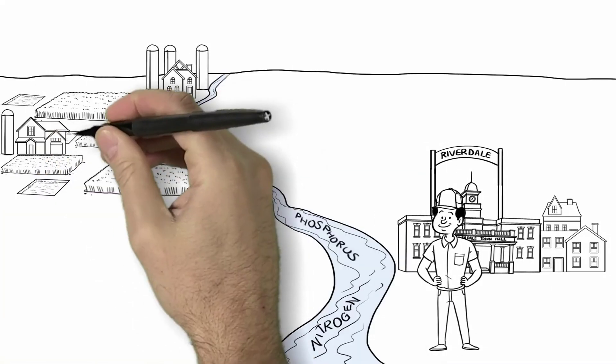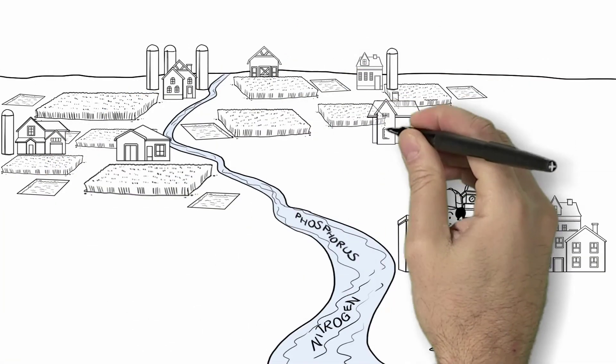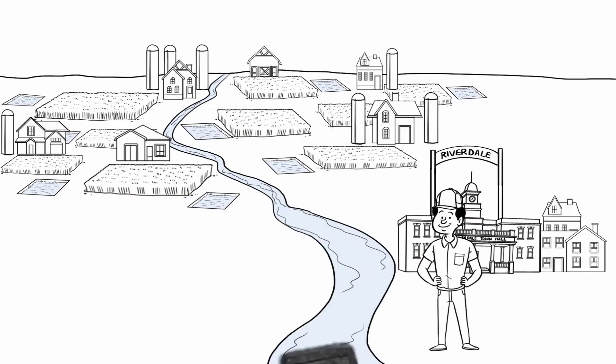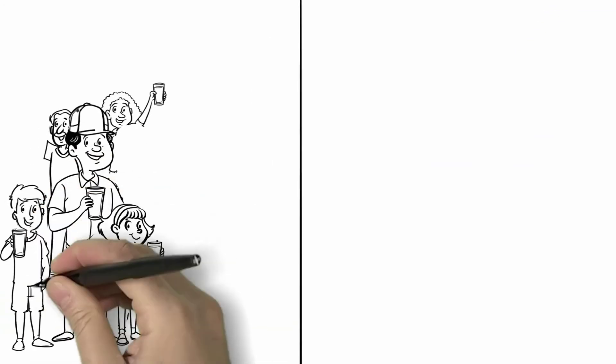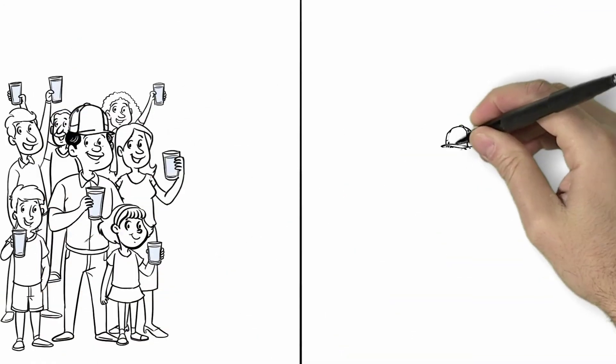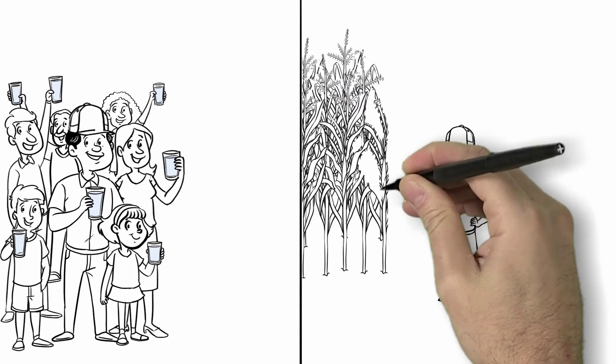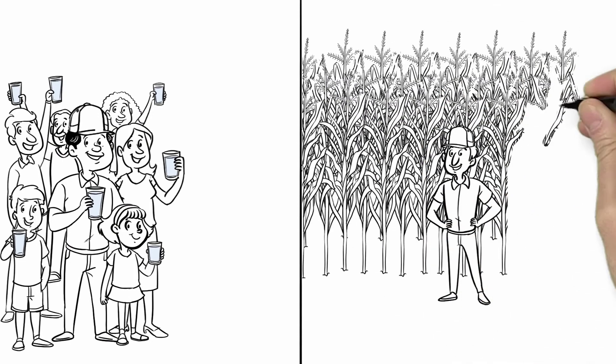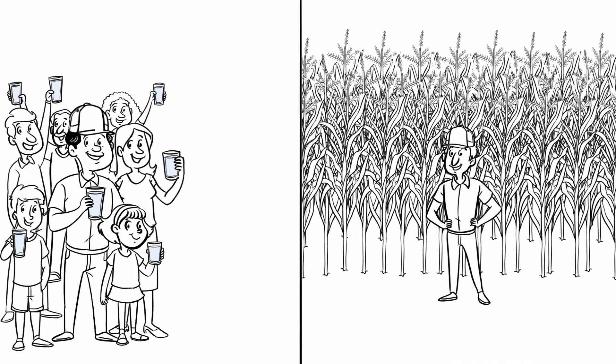His neighbors see what he has done and realize that they could store more water on their farms as well. As a result of all the water storage upstream, Riverdale's water system has higher quality water, which makes Ed and the people of Riverdale happy. And Joe's happy because he now has water available throughout the growing season.